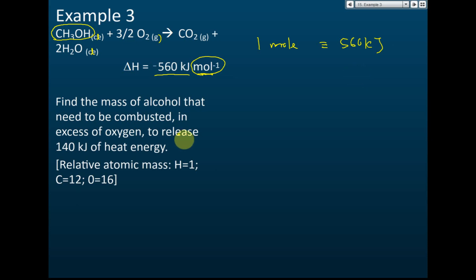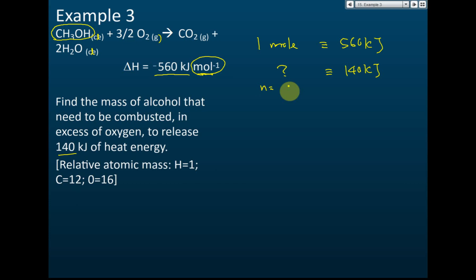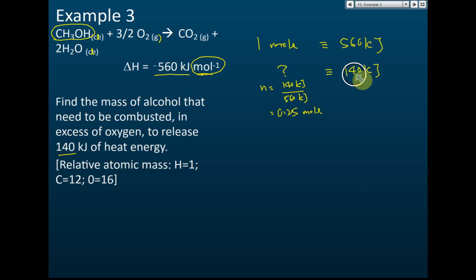The question asks us to find the amount of alcohol burned when 140 kilojoules of heat is released. So we need to find the number of moles first. The number of moles equals 140 kilojoules divided by 560 kilojoules, which gives 0.25 moles.